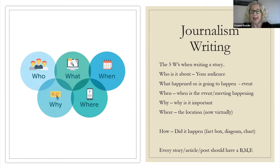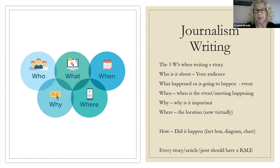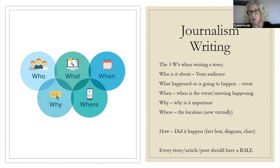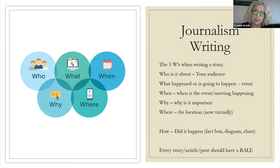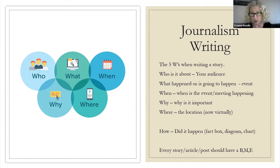Also in journalism you're told to use the five W's and the H — how did it happen. You don't always have to use this, but for instance if I were writing about Alzheimer's, I'd add a timeline box or fact box with statistics from Ireland and the States. It adds a bit more information to your story. Every story and article always has to have a beginning, a middle, and an end.